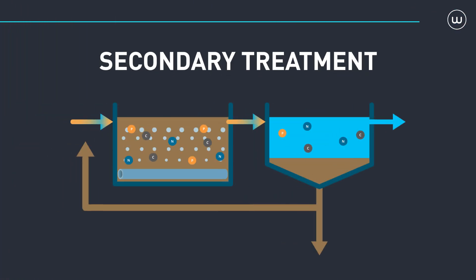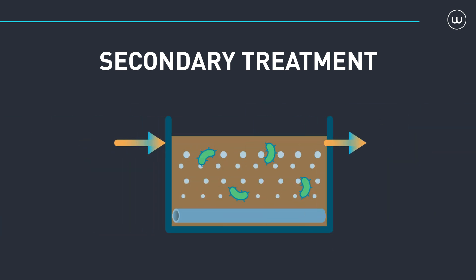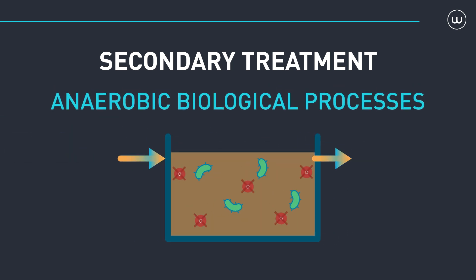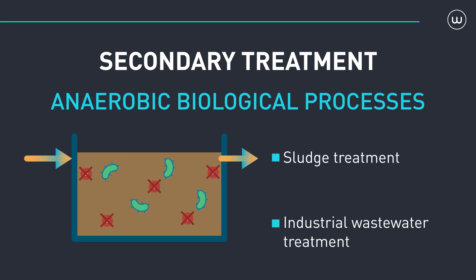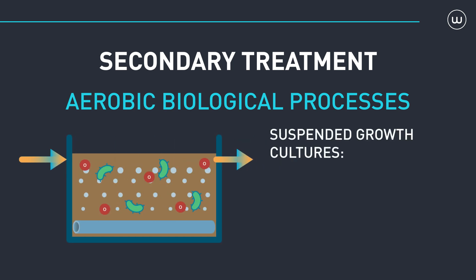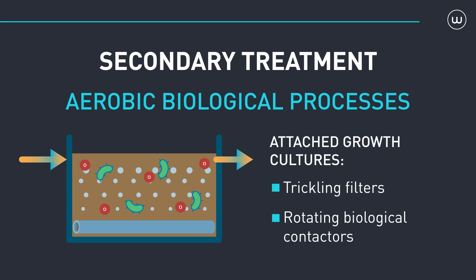The purpose of secondary treatment is to remove biodegradable organic matter containing carbon or nitrogen from wastewater. In certain cases, it can also help treat phosphorus pollution. The process involves microorganisms present in the natural environment breaking down pollution. There are two types of biological processes: anaerobic and aerobic. Anaerobic biological processes take place in the absence of oxygen and are commonly found in sludge treatment and industrial wastewater treatment. Aerobic biological processes take place in the presence of oxygen, and can be in the form of either suspended growth cultures, such as activated sludge and ponds, or attached growth cultures, such as trickling filters and rotating biological contactors.